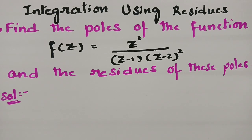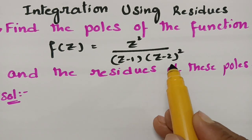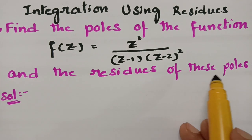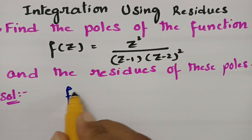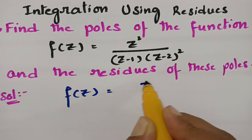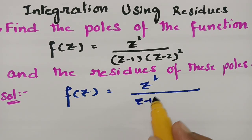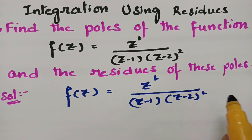This video is on integration using residues. We have to find the poles of the function f(z) = z² / [(z-1)(z-2)²] and the residues at these poles.